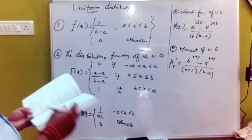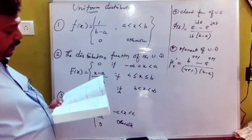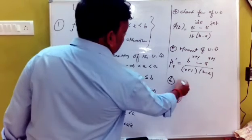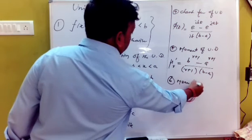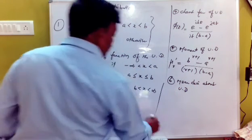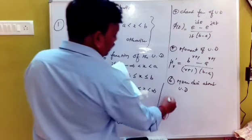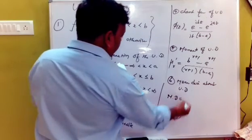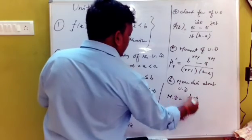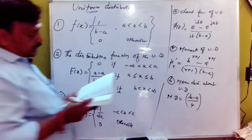There are 5 formulas that are very important about uniform distribution. The mean deviation about the uniform distribution — that is, the mean deviation for the uniform distribution — is b minus a by 4. You can use b minus a by 4 as the mean deviation formula.